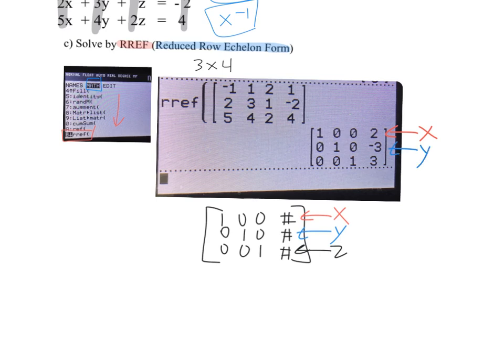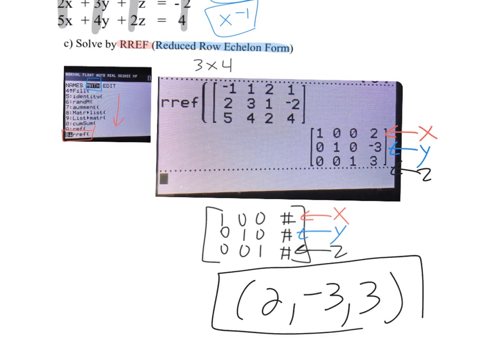Not surprisingly, the calculator gives you the same solution as the first two methods: x = 2, y = -3, and z = positive 3. Those are the three methods of solving systems of equations using matrices.